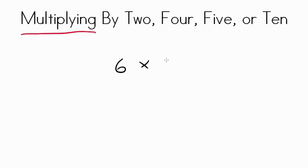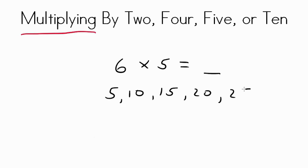Skip counting by 5s is quite easy — 5, 10, 15, 20 — so it'll be real easy when you multiply with 5s. For instance, let's do 6 times 5. We're going to skip count by 5s and see if we can go all the way up to 6 groups of it: 5, 10, 15, 20, 25, 30. We skip counted 6 times and got a product of 30. So 6 times 5 is 30.